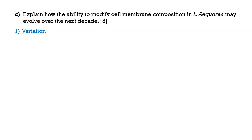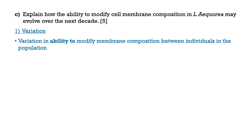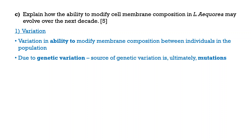Let's talk about variation. The question is about the evolution of the ability to modify cell membrane composition — not evolution of the membrane itself, but the evolution of this ability to modify membrane composition. The variation would therefore be variation in the ability to modify membrane composition. This ability is a phenotype, so that's a phenotypic variation. Phenotypic variation is always due to genetic variation.